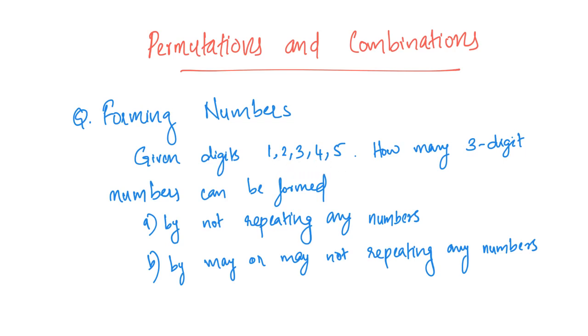For example, if I choose 3-2-3, which is a three-digit number, but 3 is repeated here, so this is not possible. 4-1-1 - 1 is repeated here, so it is not possible. 3-7-2 is perfectly fine since no numbers are repeated.